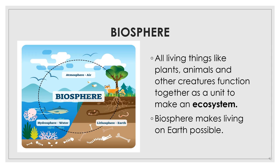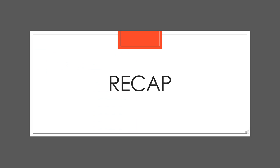I think our ride to all the four spheres of the earth was exciting and fruitful, wasn't it? Students, now let us do a small recap on what we have learnt today. Firstly, we learnt about what the environment means — the environment is the natural world in which all living organisms survive. Then we learnt about how the environment is made up of four different spheres: hydrosphere, atmosphere, lithosphere and biosphere.